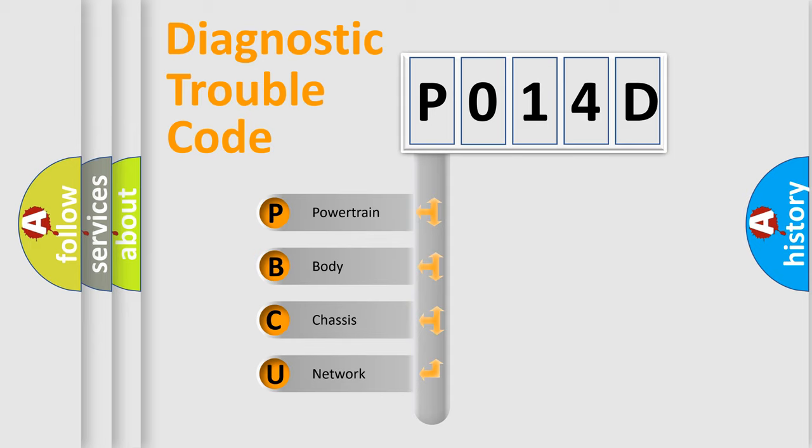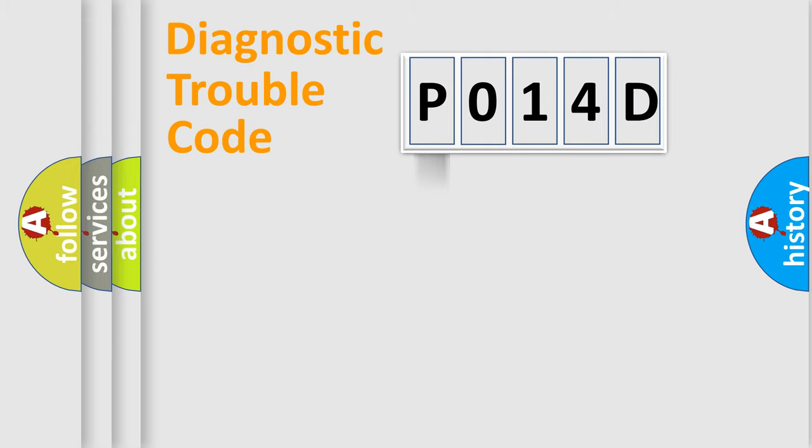We divide the electric system of automobile into four basic units: Powertrain, Body, Chassis, and Network. This distribution is defined in the first character code.